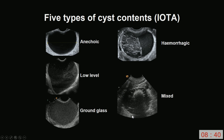When using the IOTA terminology, there are five types of cyst contents: anechoic, low-level, ground glass, hemorrhagic, and mixed.